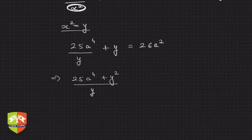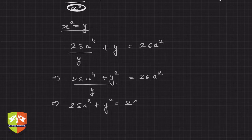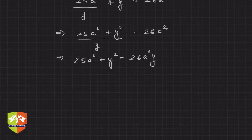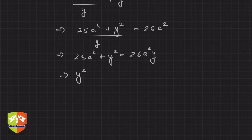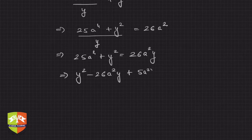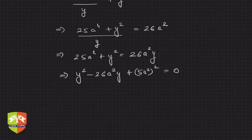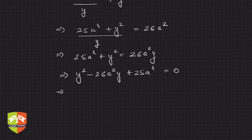Cross multiplying gives: 25a to the power 4 plus y squared equals 26a squared times y. Now you can see this is reduced to a quadratic equation. I can also write 25a to the power 4 as 5a squared whole squared. So rearranging: y squared minus 26a squared y plus 25a to the power 4 equals 0. This is a quadratic equation in y, so simply use any method you know — I will use the factorization method.